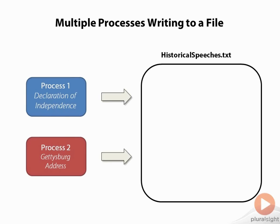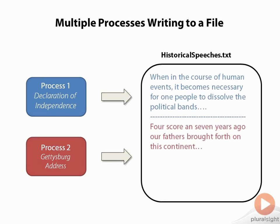Let's imagine a scenario where we have two different processes that are going to be writing to the same file. As you can see here, we have those two different processes on the left-hand part of the slide, and they're going to write the text of some famous speeches into our file on the right-hand part of the slide. What we would expect is that we would have the text of the Declaration of Independence in the file, then some sort of delimiter between the two speeches, and then the text of the Gettysburg Address. If both processes are writing to the file at the same time and they're not aware of what the other process is doing, this is probably not the result we're going to get.